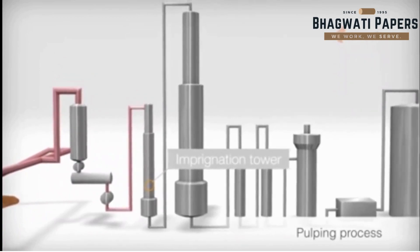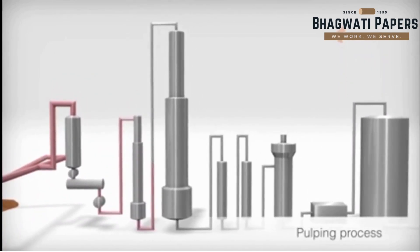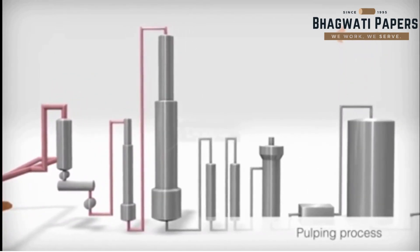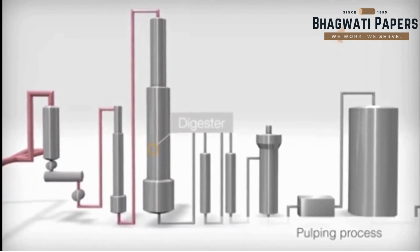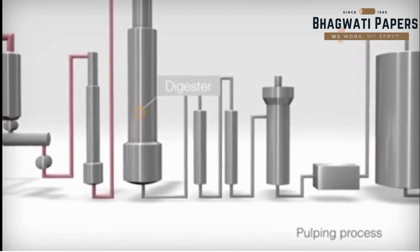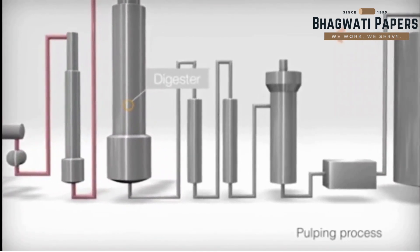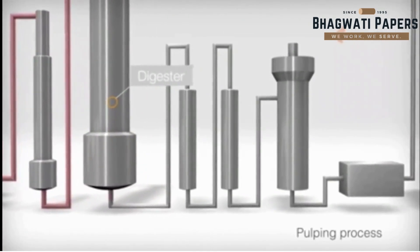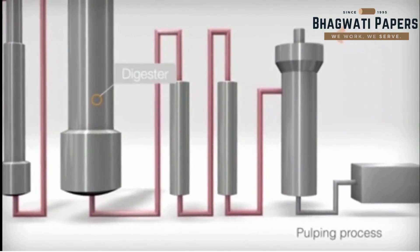After impregnation, the fully soaked chips are transported to the top of the digester, where cooking starts. Cooking takes place from the top to the bottom of the digester. In the lower part of the digester, the cooking process is stopped by washing liquor.